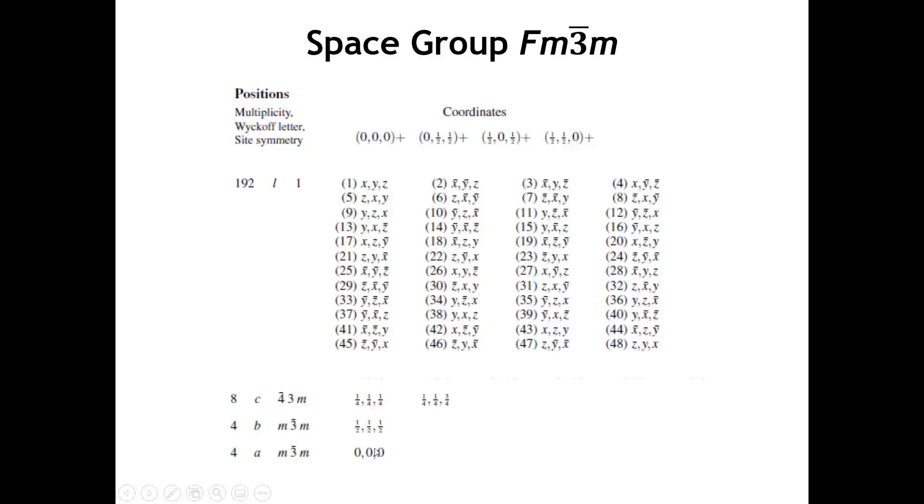Now, if we only have an atom at the origin, you can imagine that these are going to give just atoms at the faces. That would be the structure of a face-centered cubic metal. Here, of course, we don't have a face-centered cubic metal because we have an atom not only at the origin, but also at 8c.